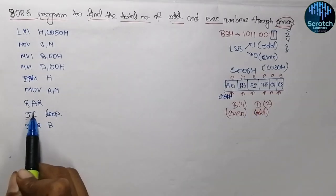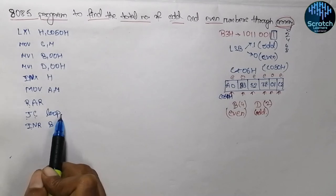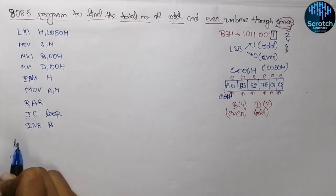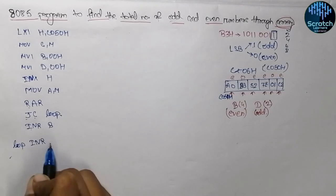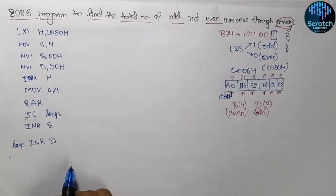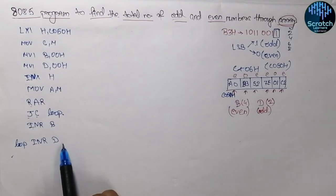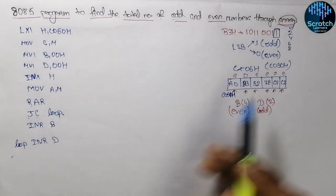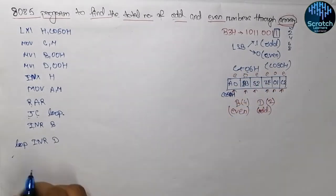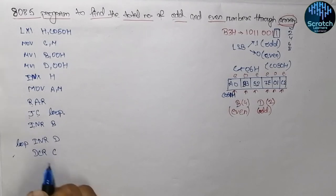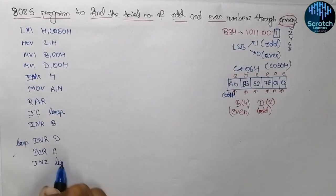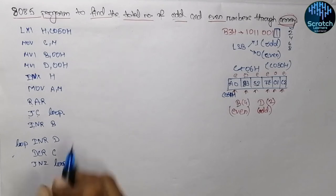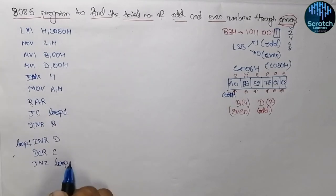After checking the carry flag, if carry is set the program jumps to the label for odd numbers and increments register D. Then we decrement the total number of elements in register C using DCR C, and check whether it equals 0 using JNZ. We label these points as Loop 1, Loop 2, and Loop 3 to keep track of where the control flow goes.